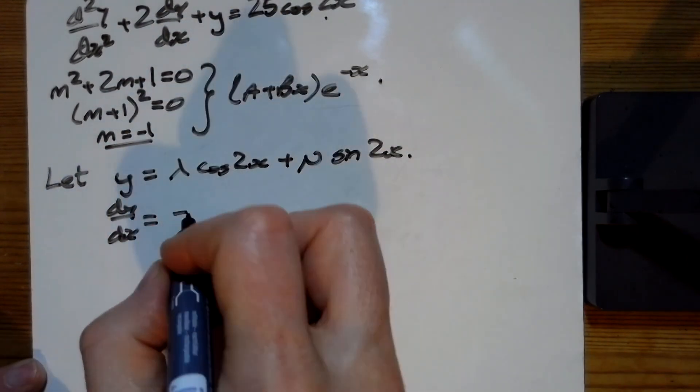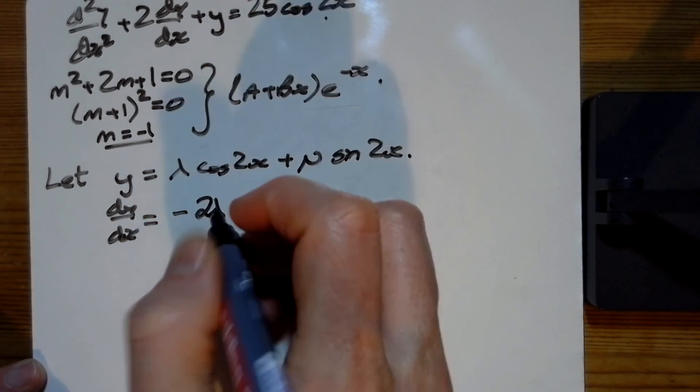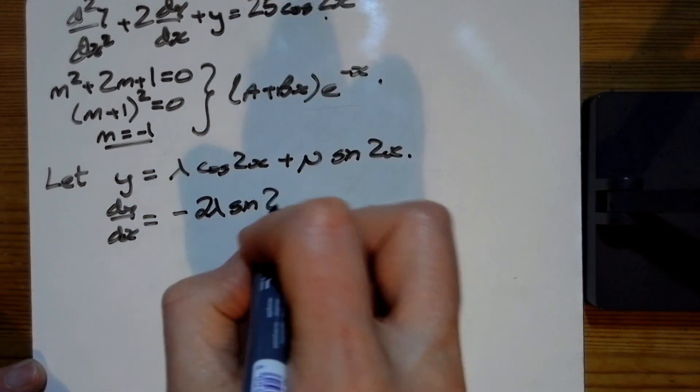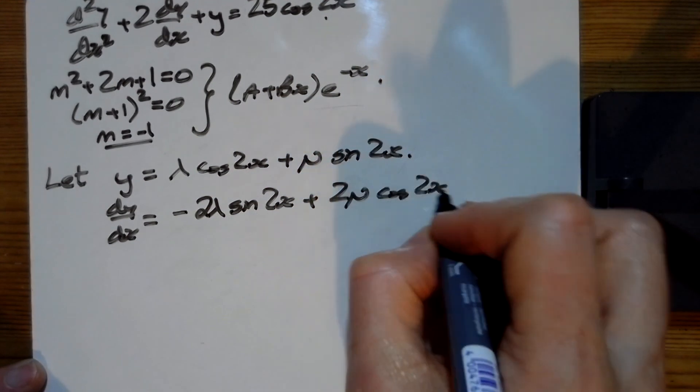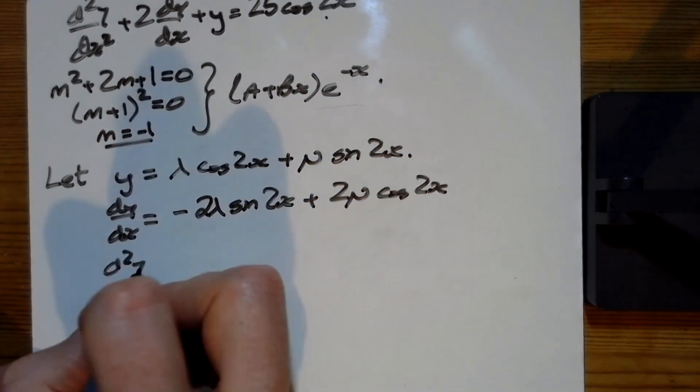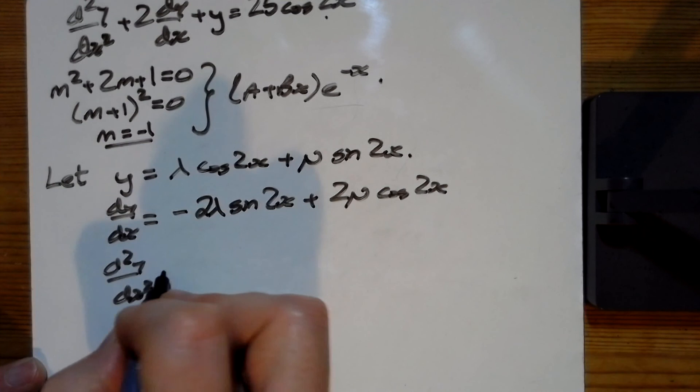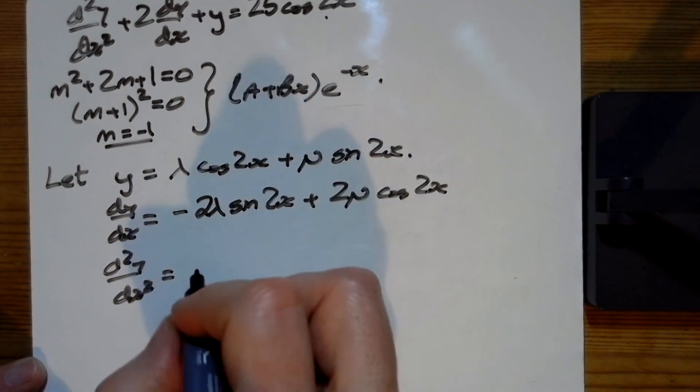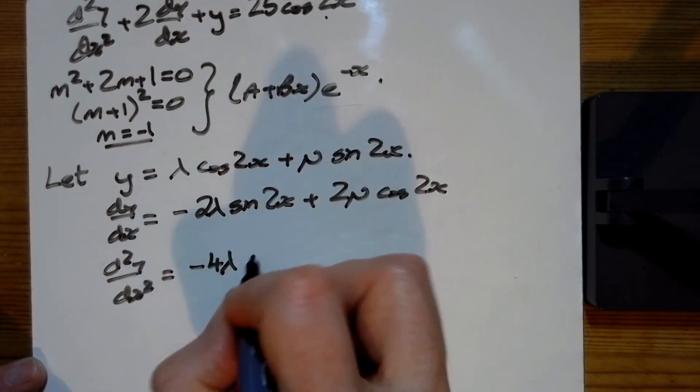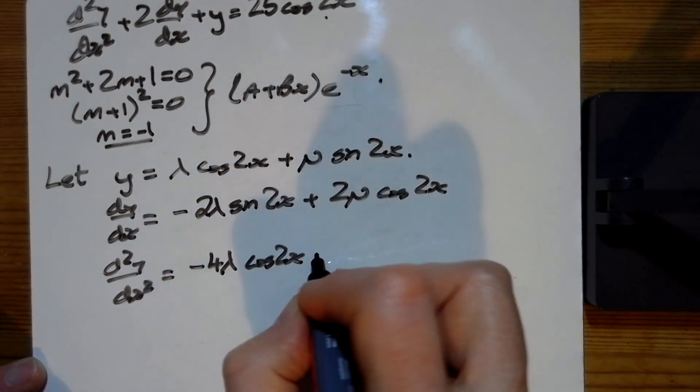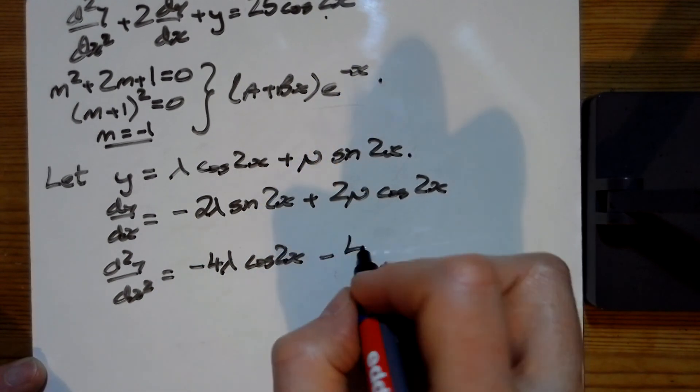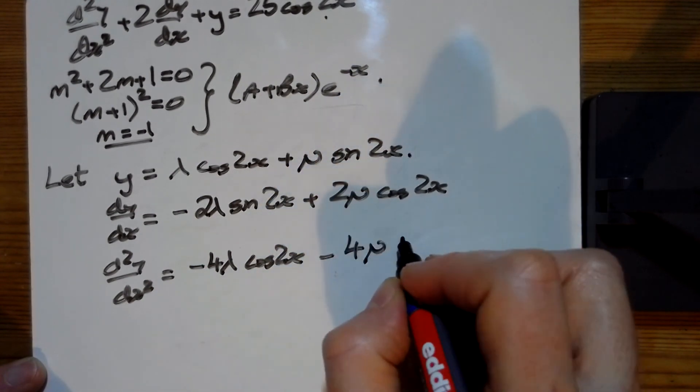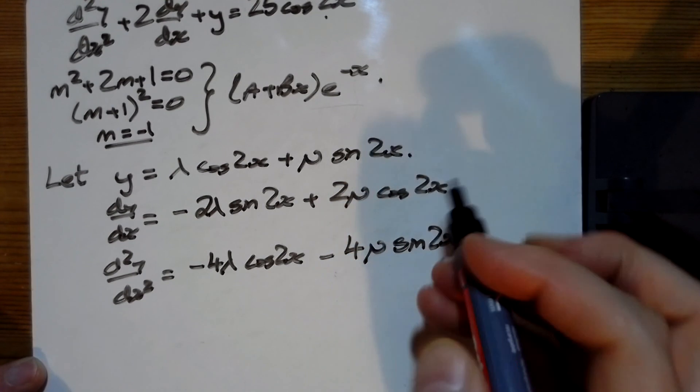And sine goes to cos, always 2x's here. Differentiate again, so the sine goes to the cos bringing the 2 out again, and the cos goes to the minus sine here. So we've got -4μsin(2x). They should go sine, cos, sine, cos, sine—yep, that looks okay.